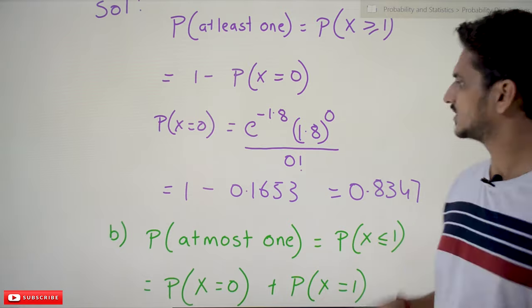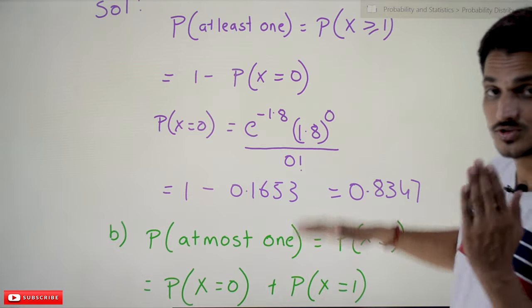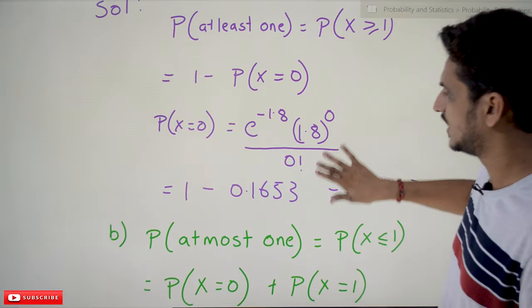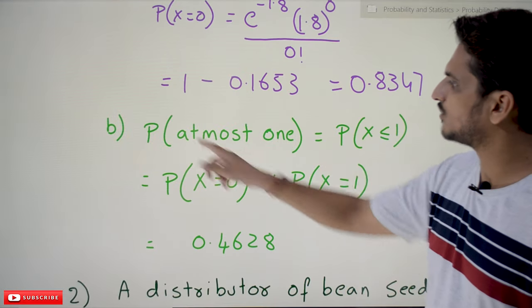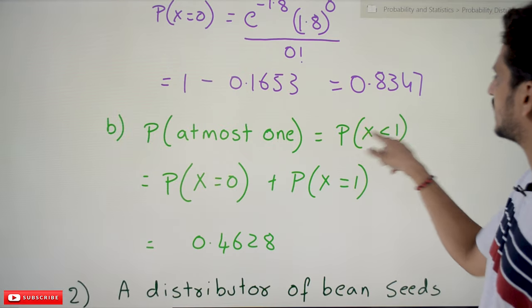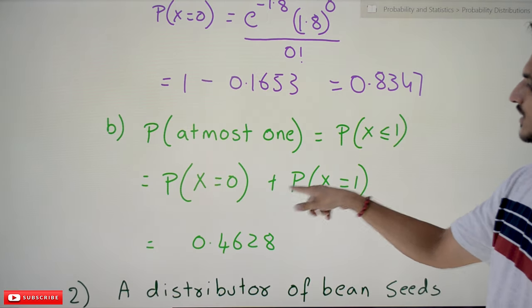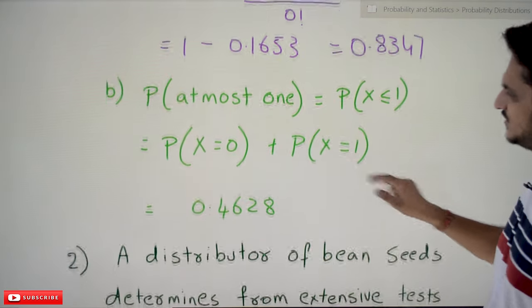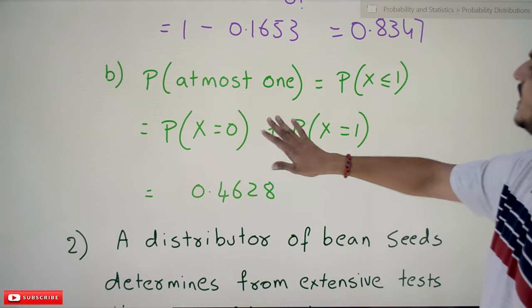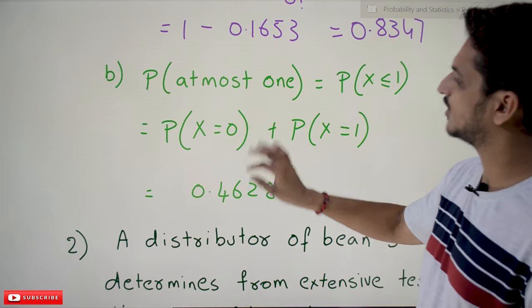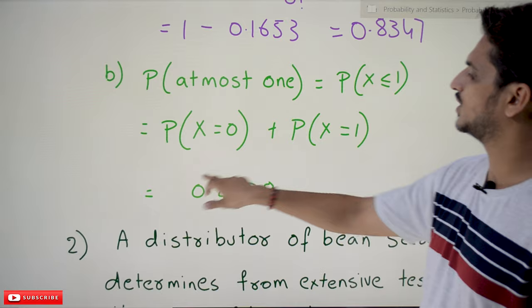So that is how Poisson's distribution is very helpful. Coming to the next one, probability of at most 1, that is given as probability of x less than or equal to 1, means probability of x equals 0 plus probability of x equals 1. If you substitute in the equation of Poisson's distribution, we get the probability value 0.4628.